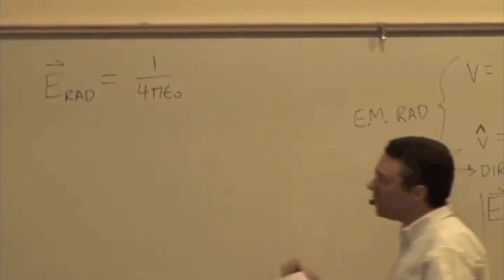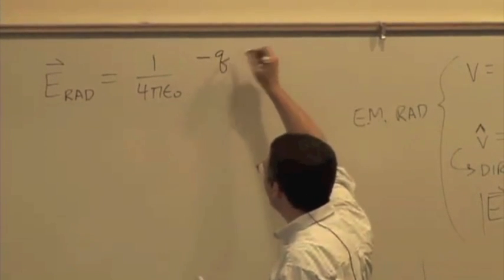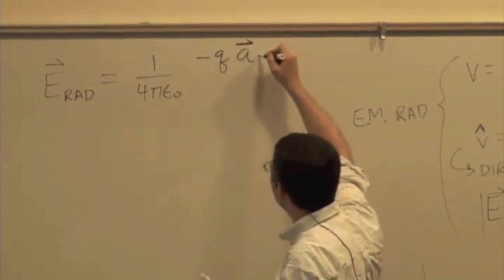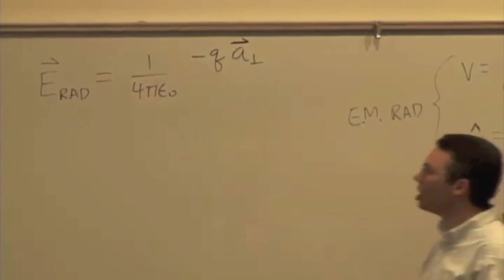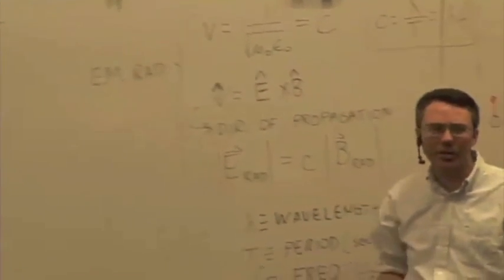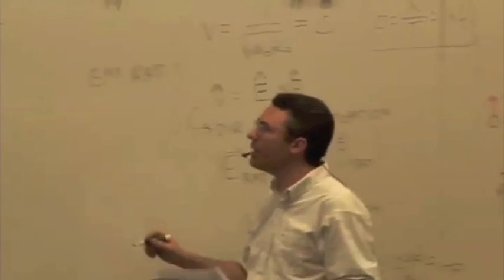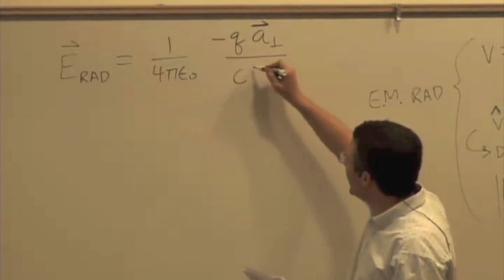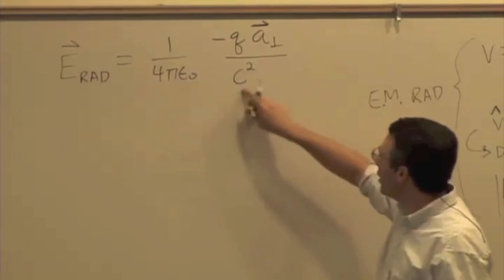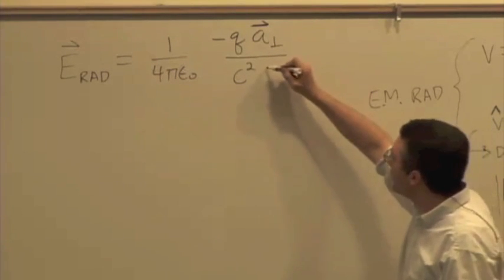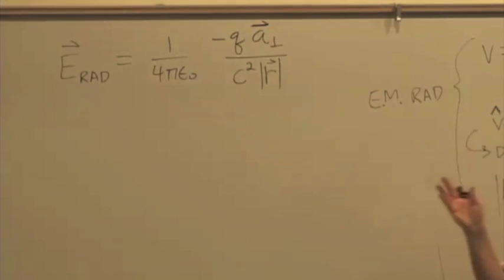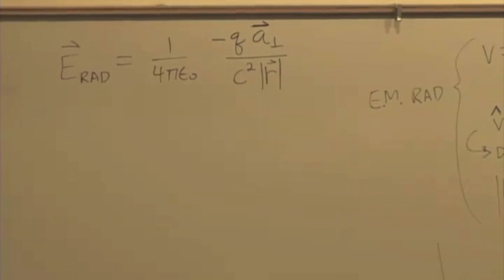It's going to be times a negative sign, q times the acceleration vector perpendicular — so it's the perpendicular component of the acceleration, which we'll talk about in just a second — divided by c squared, c being the speed of light, times r, the magnitude of r. And it's not r squared, it's just r. It's just a 1 over r dependence.